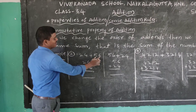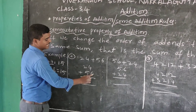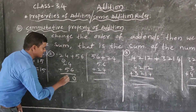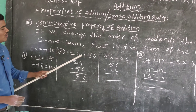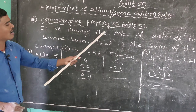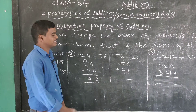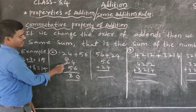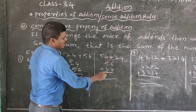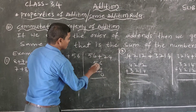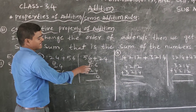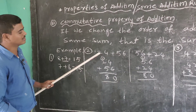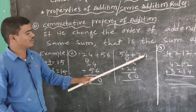Next example: 24 plus 56. In the ones place, 6 plus 4 is 10, carry 1. In the tens place, 5 plus 2 is 7, plus 1 carry is 8. So 24 plus 56 equals 80. Now we change the order: 56 plus 24. 4 plus 6 is 10, carry 1; 2 plus 5 is 7, plus 1 is 8. Both sums are the same — 80. So 24 plus 56 equals 56 plus 24 equals 80.